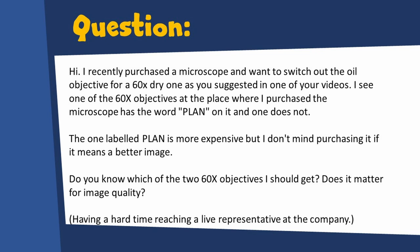Well, actually, it's a question about objectives, but there is one sentence in there that is indeed a little bit worrisome that I also like to talk about, but of course I'll answer the question. So let's get started here. I'll read it out to you. Hi, I recently purchased a microscope and want to switch out the oil objective for a 60x dry one, as you just suggested in one of your videos. I see one of the 60x objectives at the place where I purchased the microscope. It has the word plan on it and one does not. The one labeled plan is more expensive, but I don't mind purchasing it if it means a better image. Do you know which of the two 60x objectives I should get?